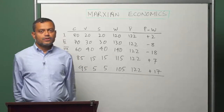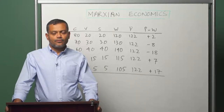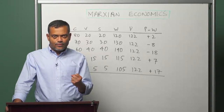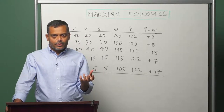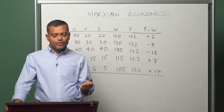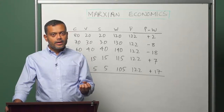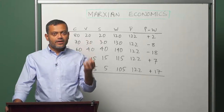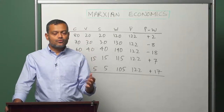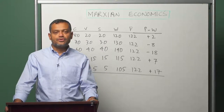We have so far understood three different forms or fragments of surplus value: industrial capital gets industrial profit, commercial capital gets commercial profit, money capitalists get interest, and now the final fourth form or fragment of surplus value is rent.